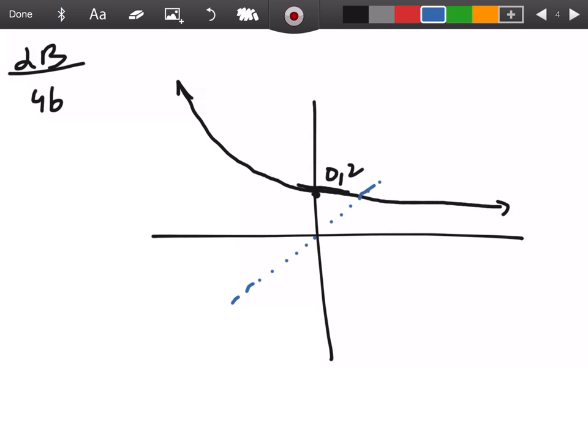So then we can draw that 45 degree angle, that y equals x line, and we know that it reflects across that. That's good to know, but I can't necessarily automatically just see it. I need some points to help me. We know one point for sure.